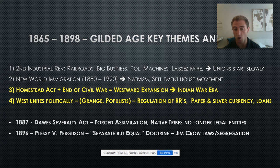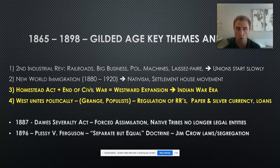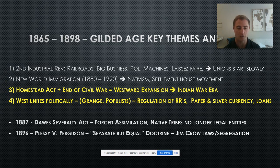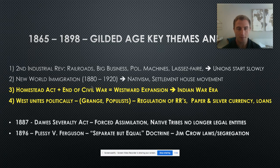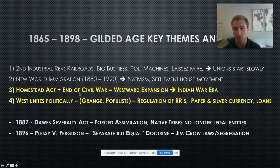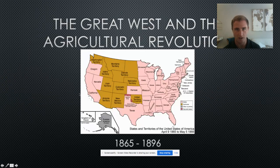In general, the West is always in debt, and so they are always calling for really three things: they want low interest loans, they want more paper currency, and they want silver. Paper currency and silver go hand in hand. They want inflation because they want to be able to pay back their loans with depreciated dollars. The Dawes Severalty Act is a big one as far as our Indian War era.